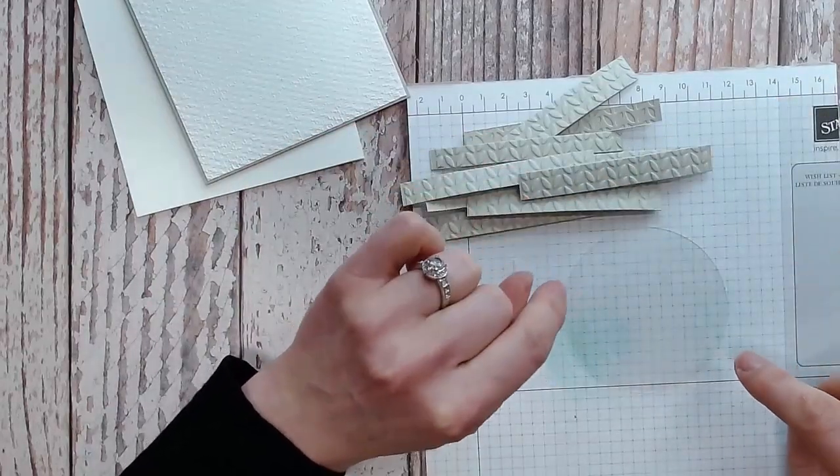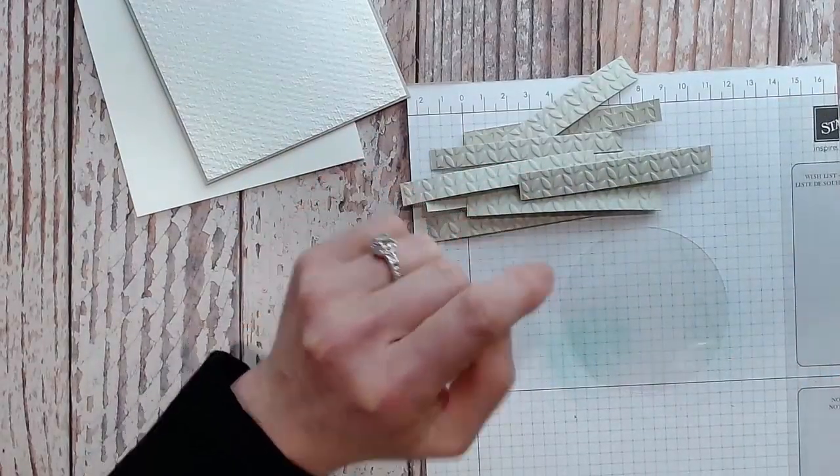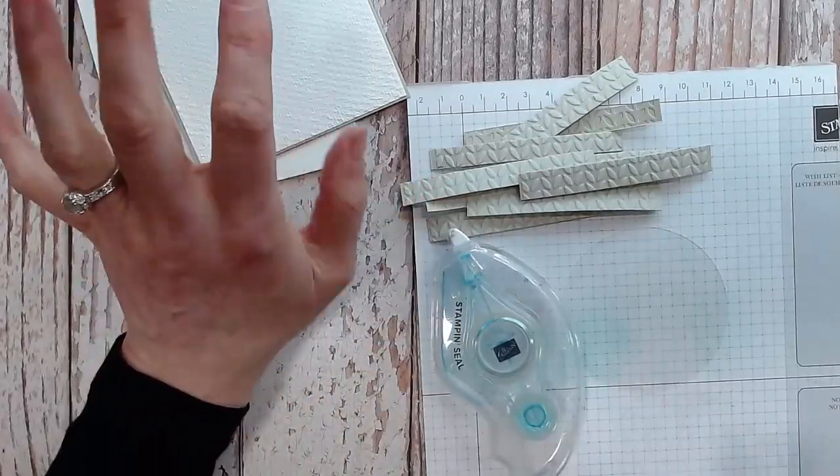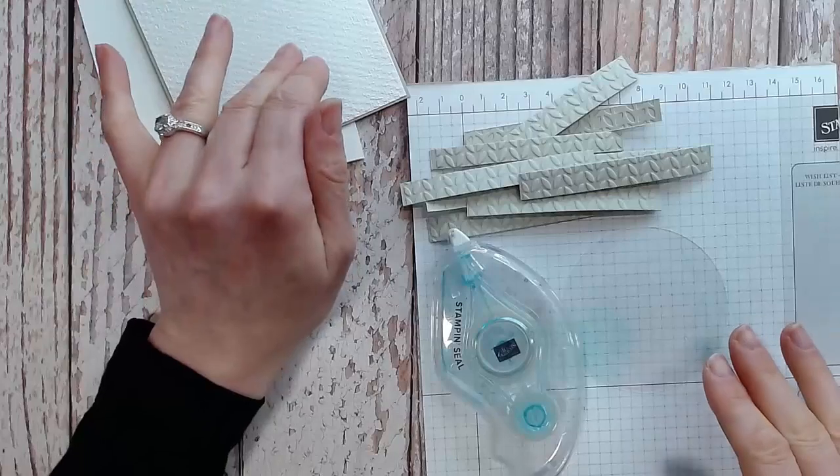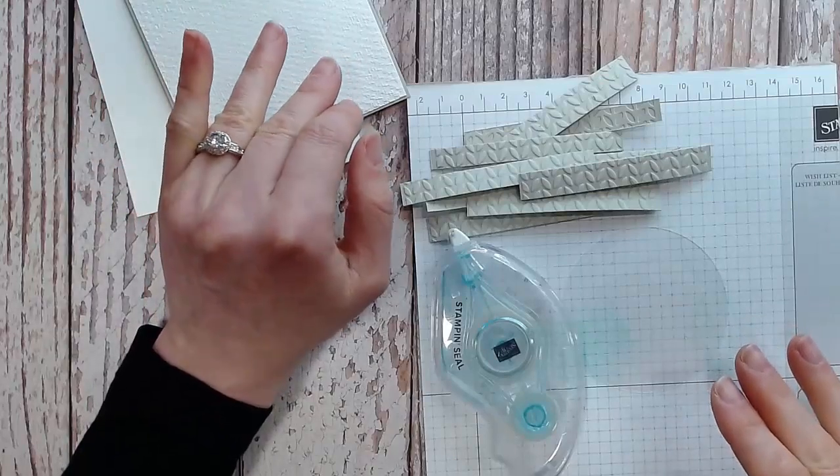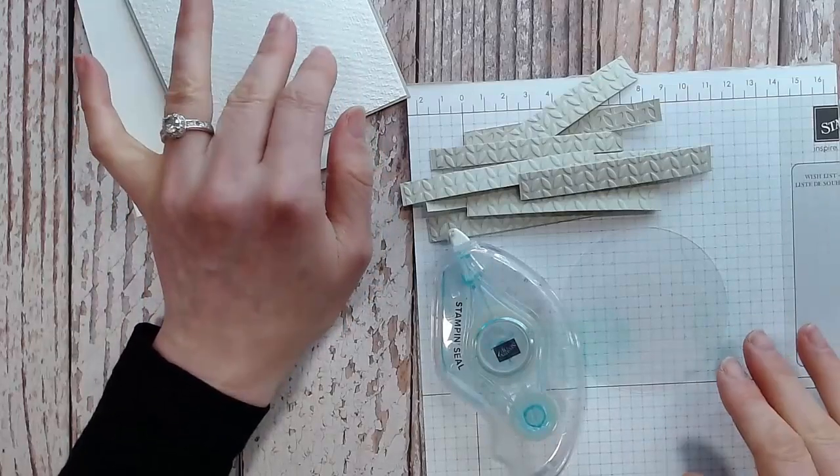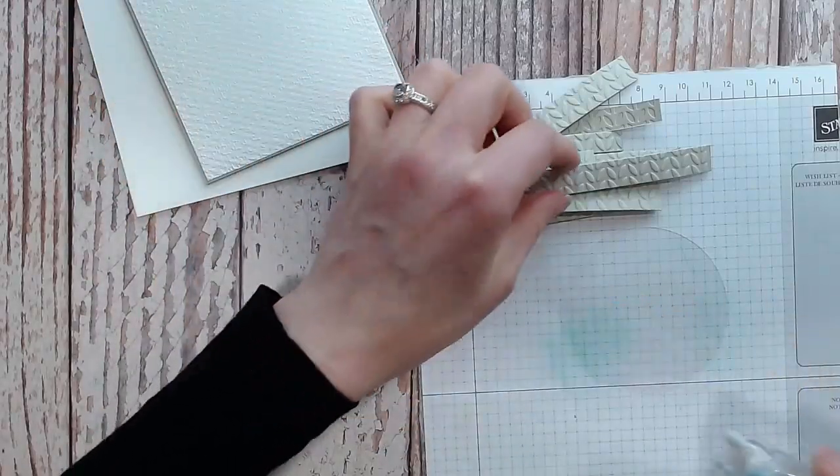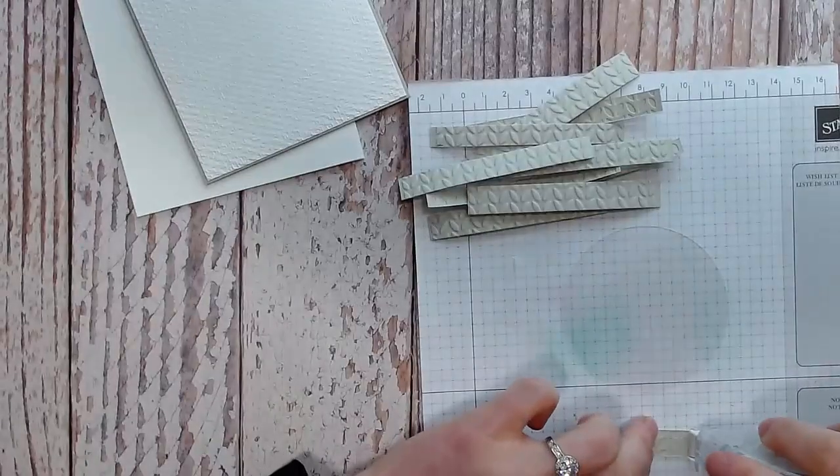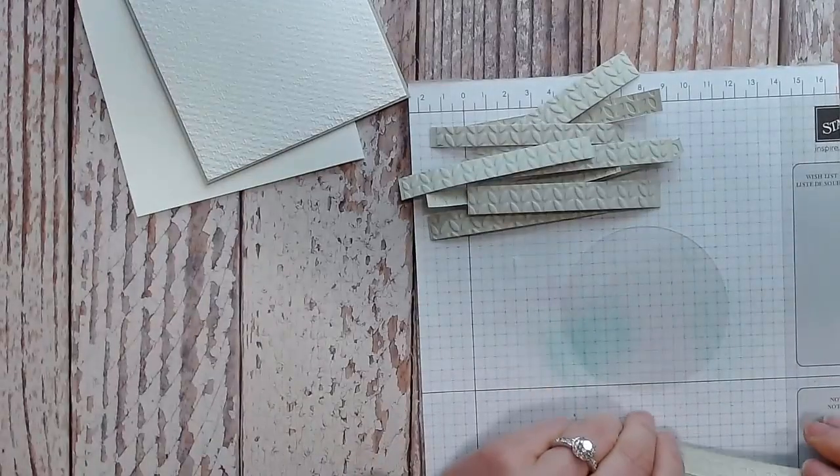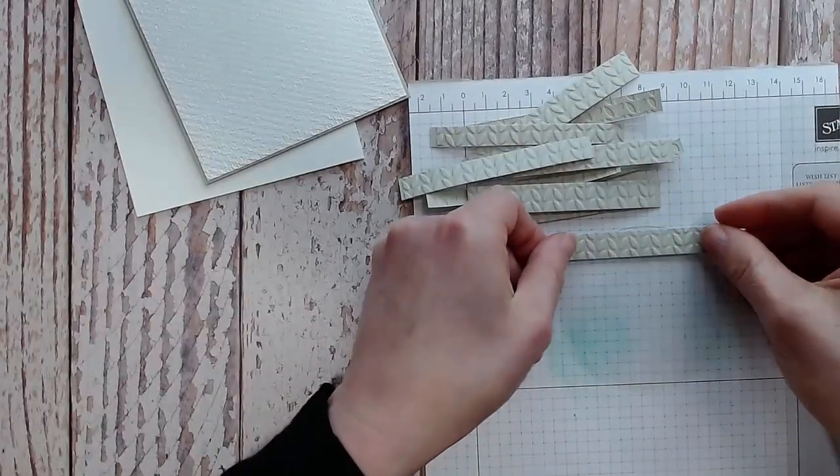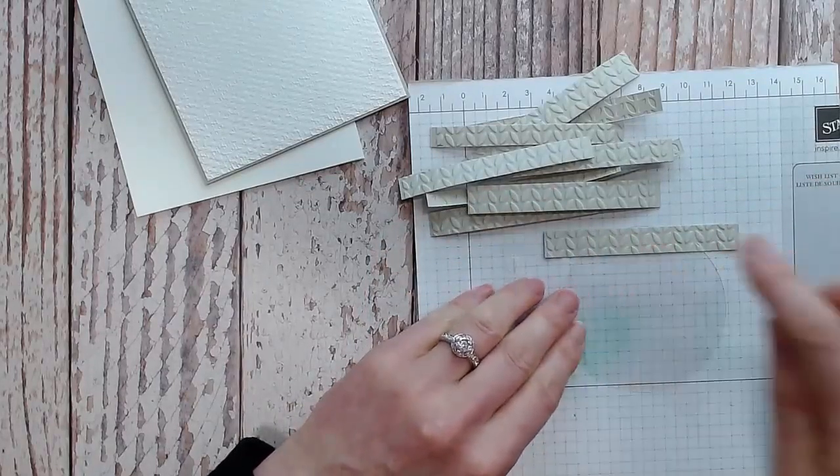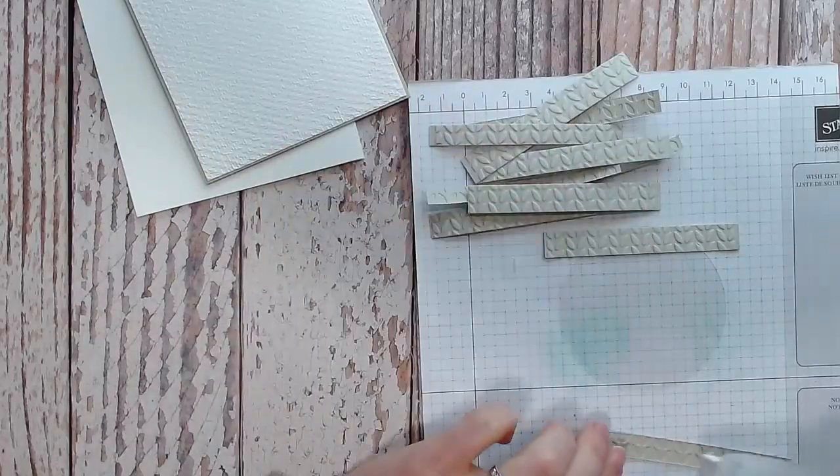I'm going to adhere that onto the acetate. You'd want to use glue dots or a tape runner or tape. I used glue earlier today and when you run it through your die cutter afterwards, the glue squishes out and it goes everywhere, so learn from my sad experience. Don't use glue on your acetate for this particular technique. I'm just going to line that up around the top of my circle.